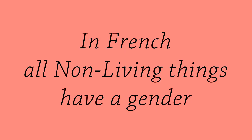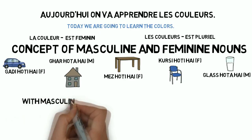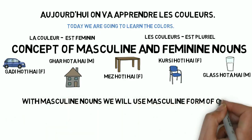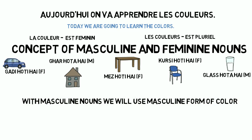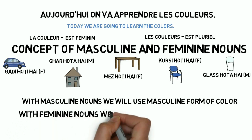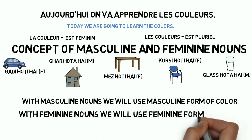In French, all the non-living things have a gender. They are either masculine or feminine. So, jo masculine nouns honge, unke saath, we are going to use the masculine form of the color. And with feminine nouns, we are going to use the feminine form of the color.